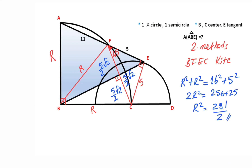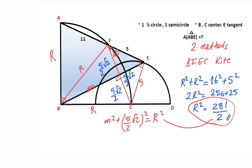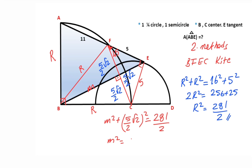So R squared equals 256 plus 25, meaning R squared equals 208 and a half. Now if you focus on this triangle, let's call this point M. Applying the Pythagorean theorem: M squared plus (5 over 2 times root 2) squared equals R squared, which we calculated as 208 and a half. So M squared equals 208.5 minus 25 over 2, meaning M equals 16 over root 2, so M equals 8 root 2.